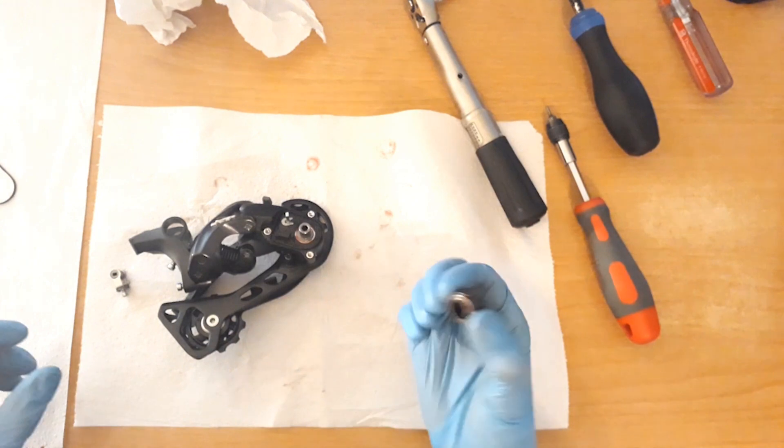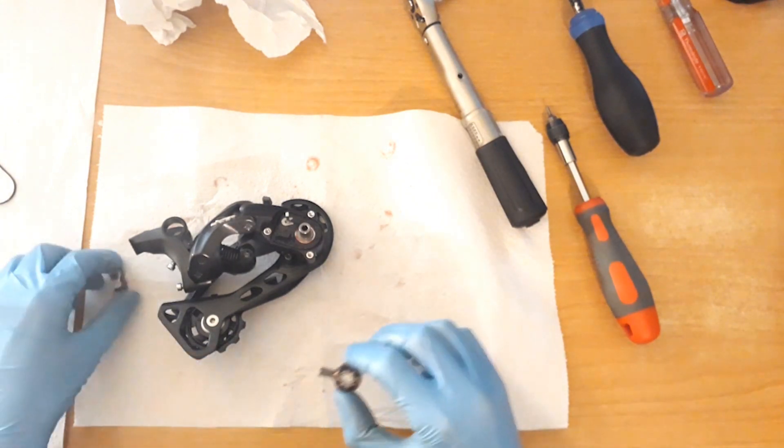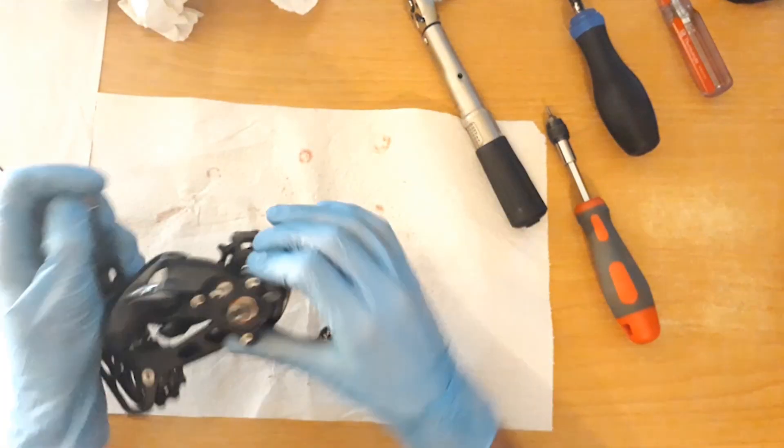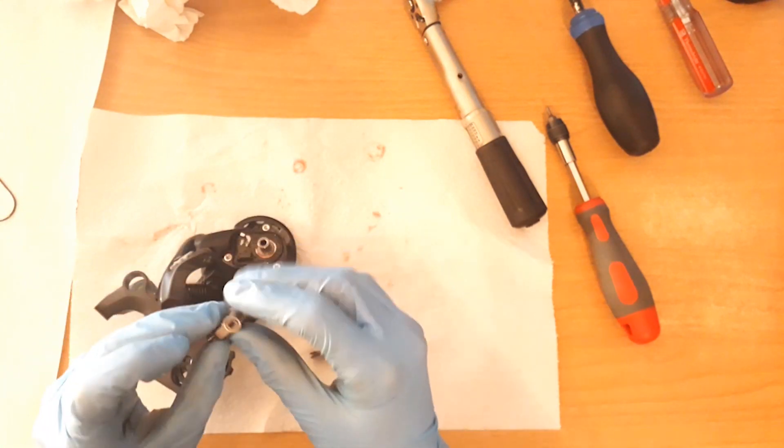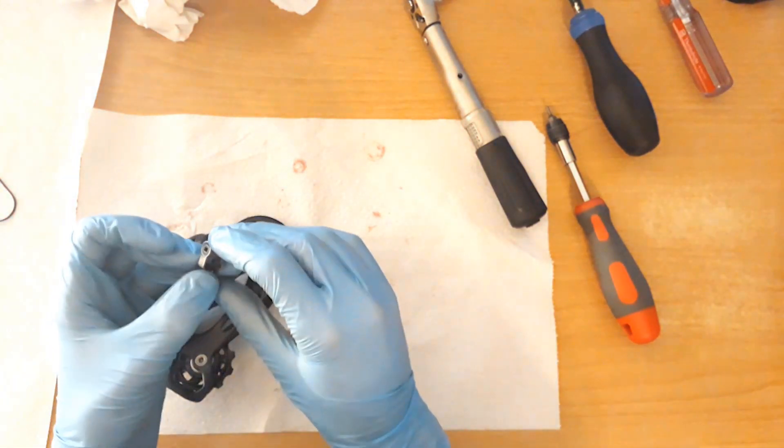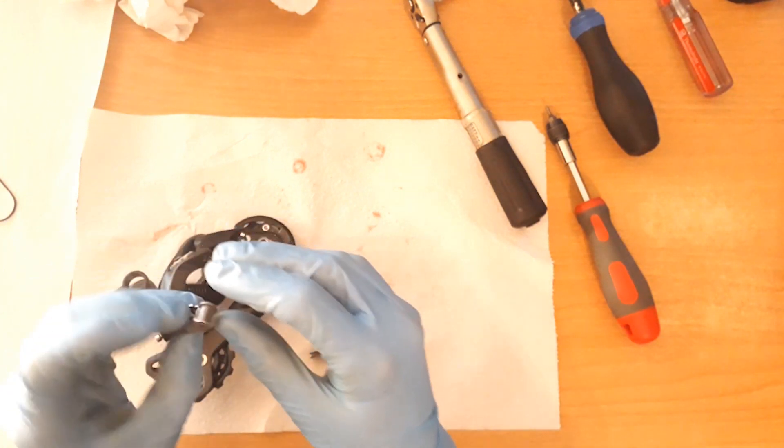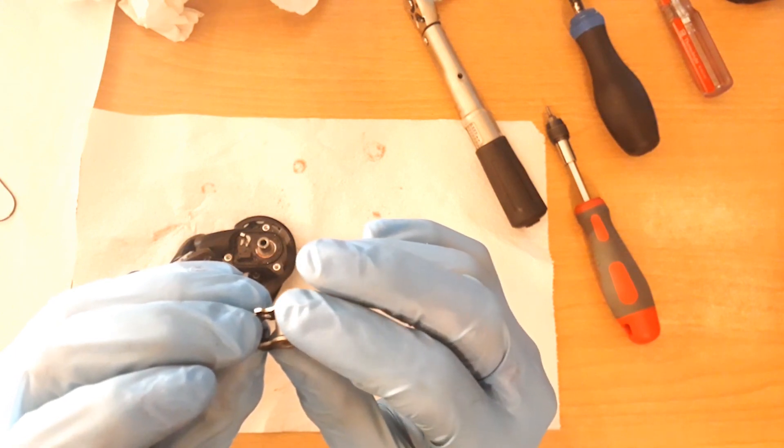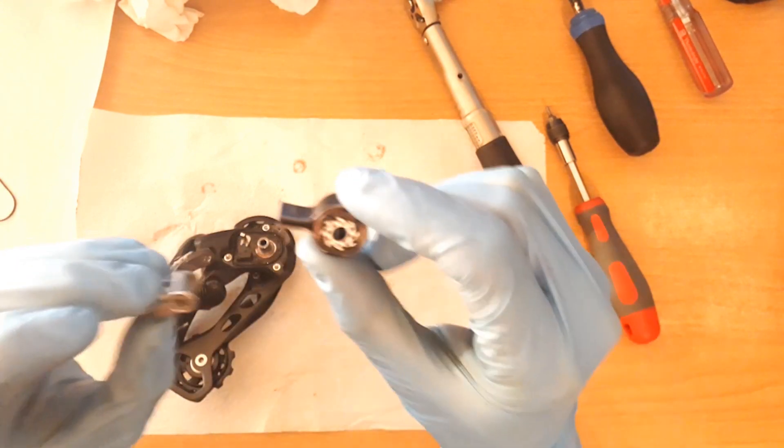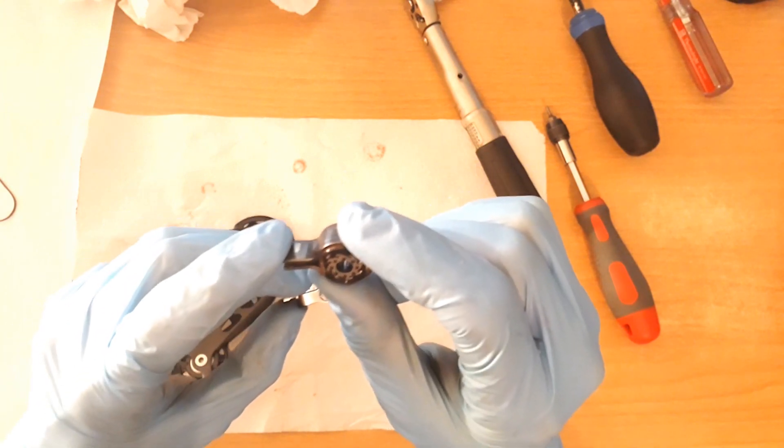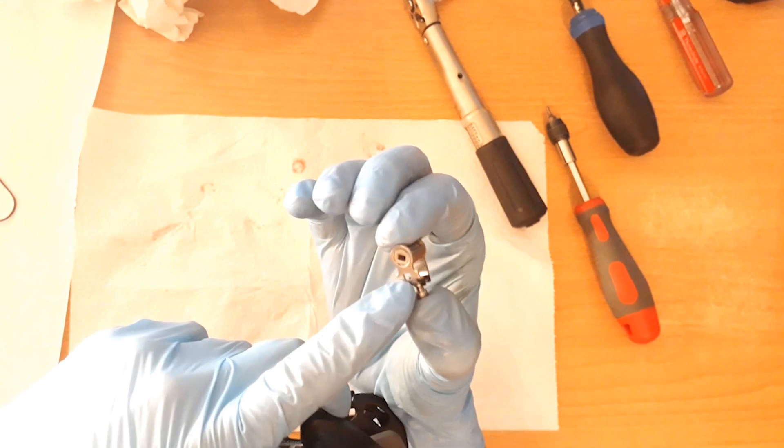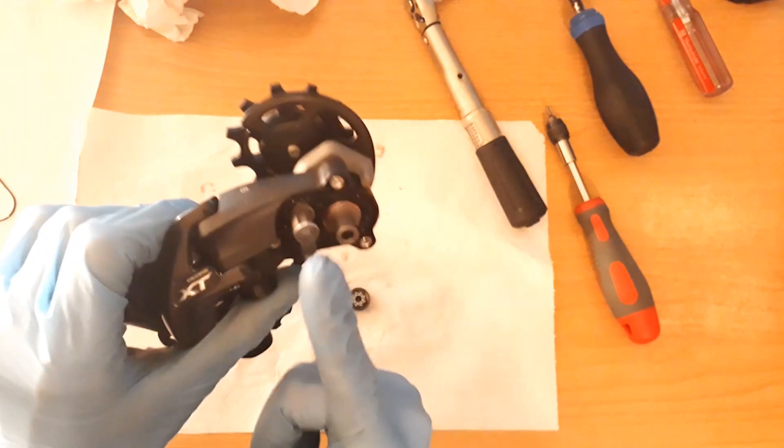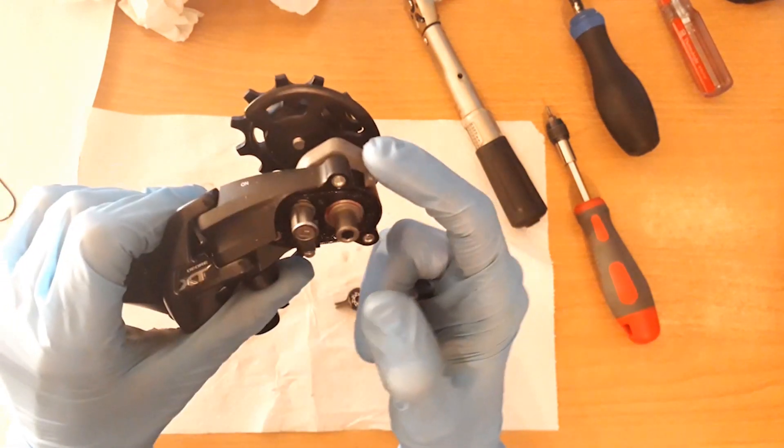Now we can reinsert the chain tensioner onto the derailleur. We need to make sure to align the square hole with the square pin, and also make sure that the raised part, this one, will press against the spring when the lever is moved into the on position. Also, the opening here is to be on the downside.